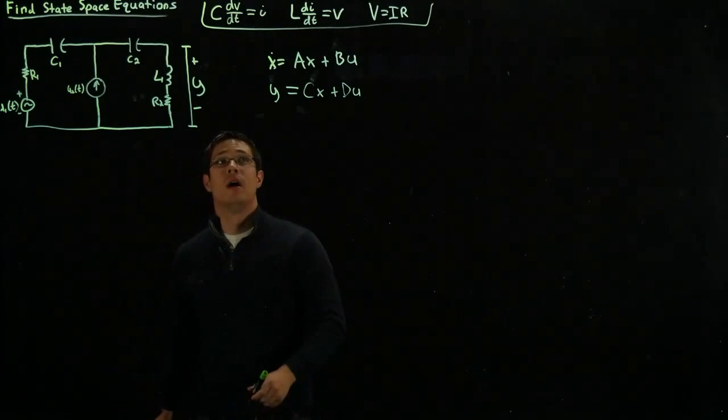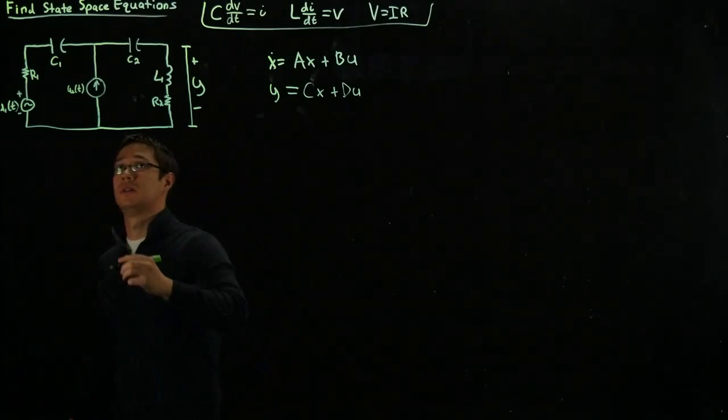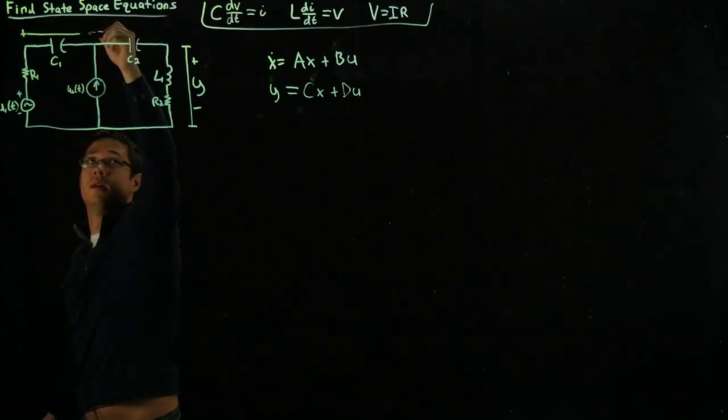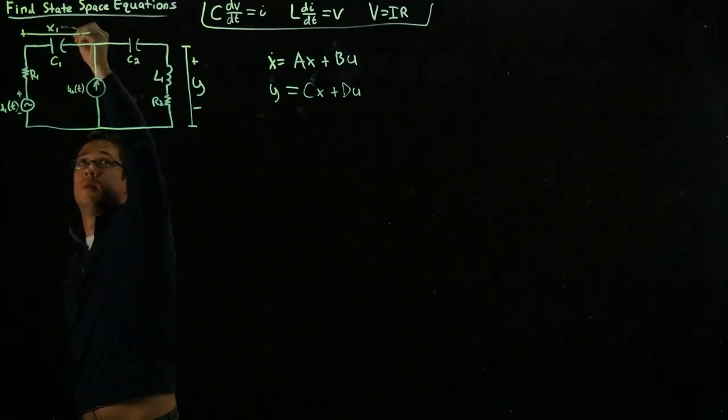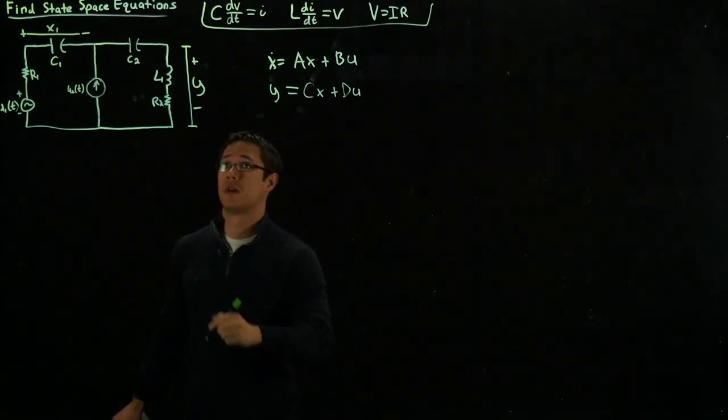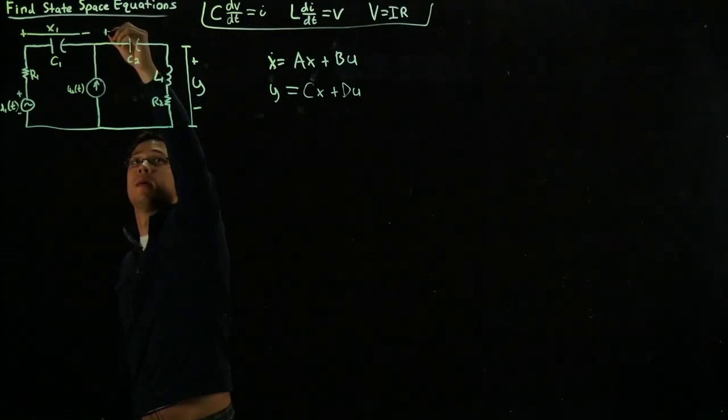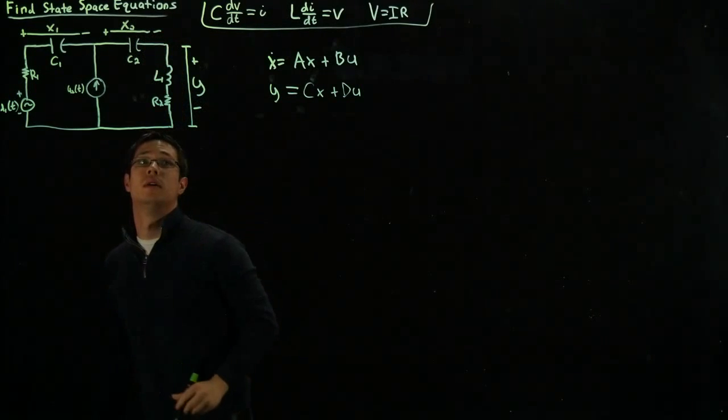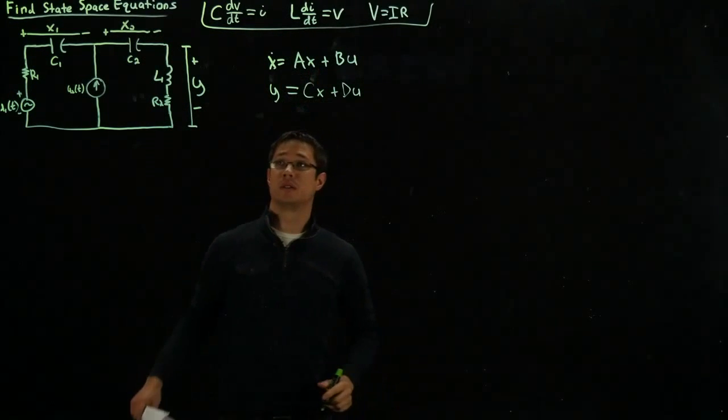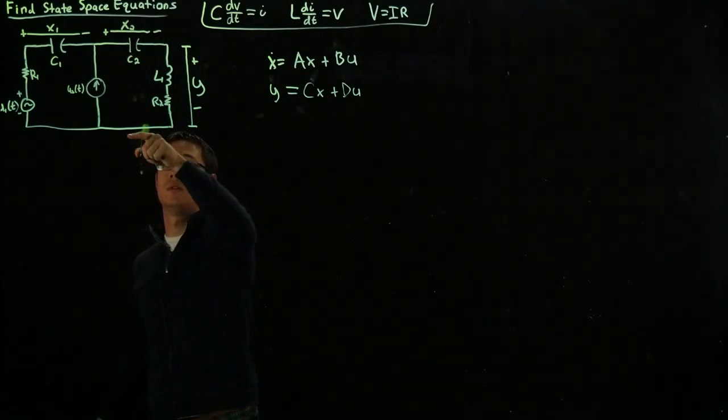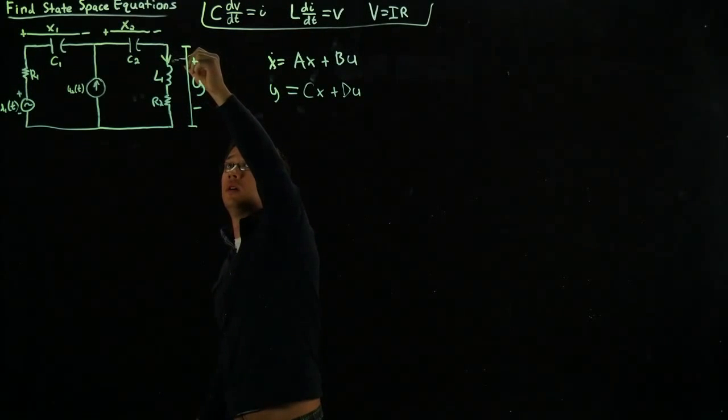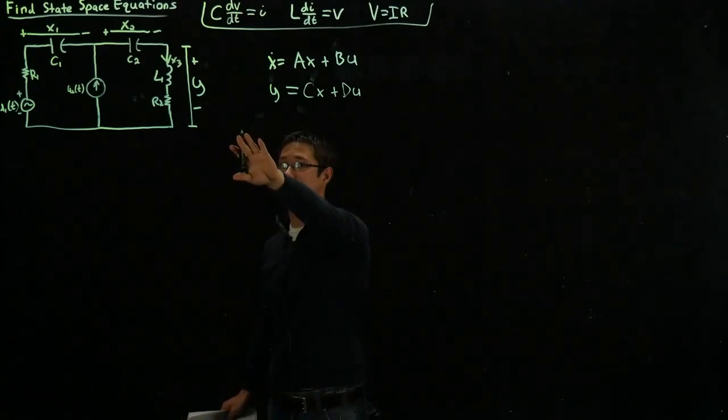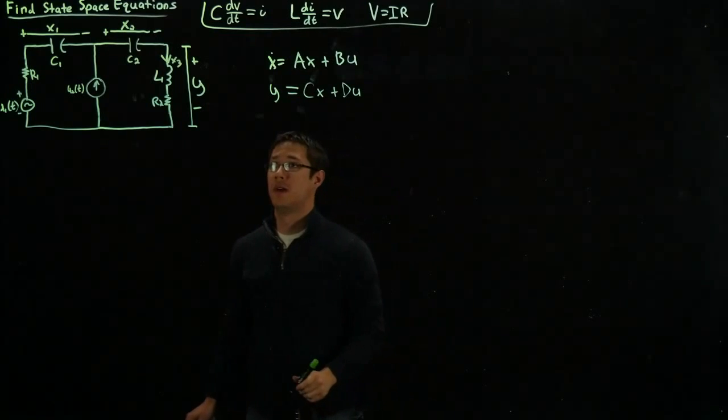Knowing that, our states for the capacitor are the voltage because capacitors are storage devices for voltage. So I'll define my first state here as x1. For capacitor 1, for capacitor 2, I'll define my state here as x2. And then for the inductor, because the inductor is current, this whole branch, the current through this whole branch here, is actually x3. Now I've defined my states on the circuit.